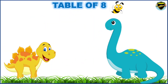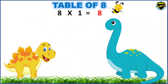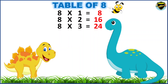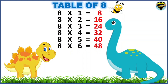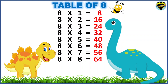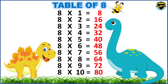Now, let's learn the table of 8. 8 1s are 8. 8 2s are 16. 8 3s are 24. 8 4s are 32. 8 5s are 40. 8 6s are 48. 8 7s are 56. 8 8s are 64. 8 9s are 72.